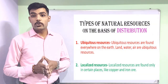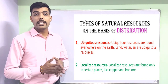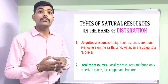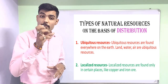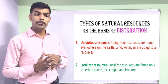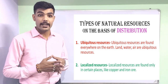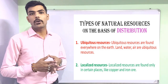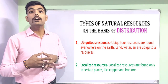On the basis of distribution, natural resources are divided into ubiquitous and localized. Ubiquitous resources are those available everywhere, whereas localized resources are specific to a particular place. For example, mineral resources are specific to a place — minerals are not available everywhere. Whereas air and water are available almost everywhere, so they are ubiquitous resources, while mineral resources are localized resources.